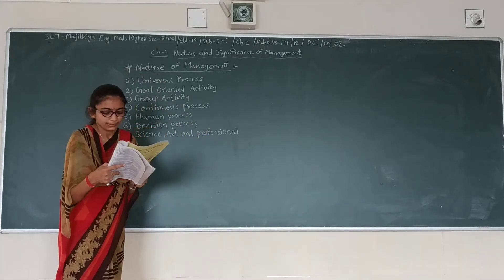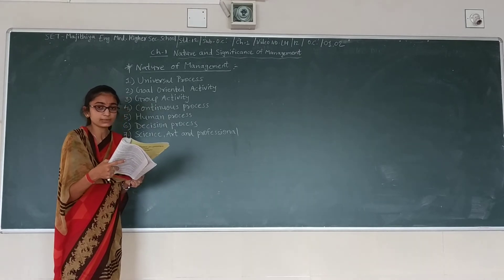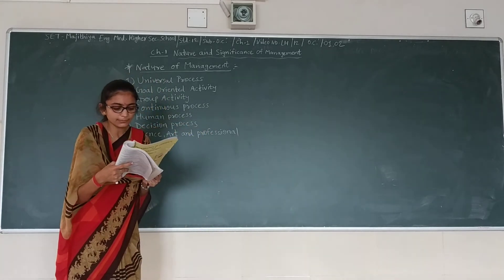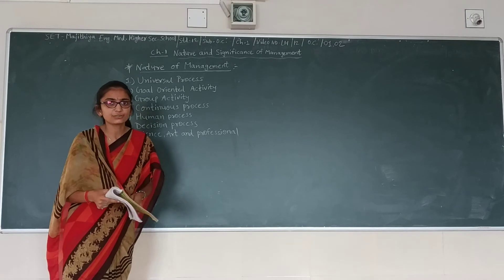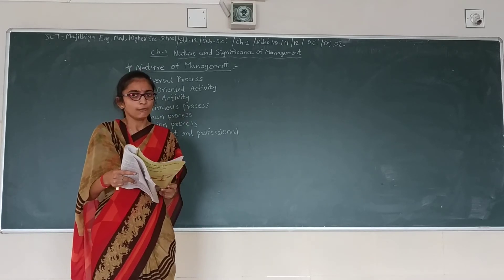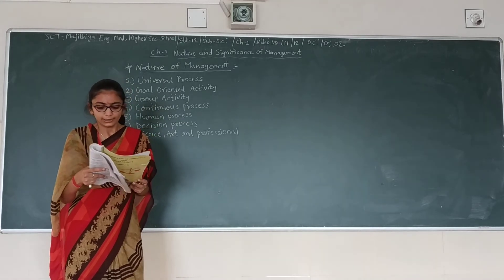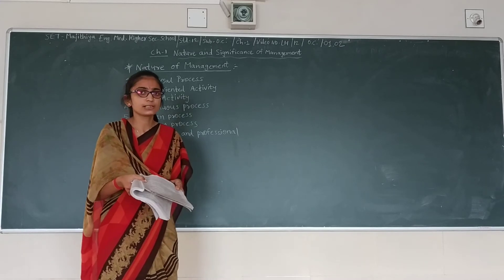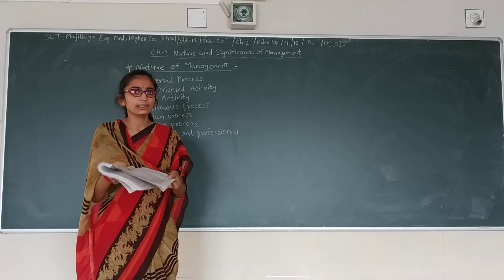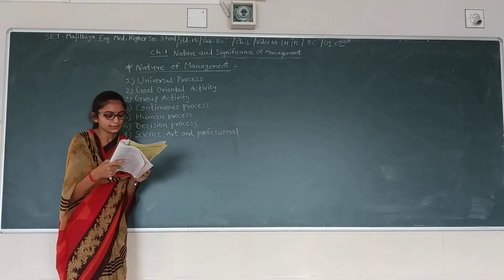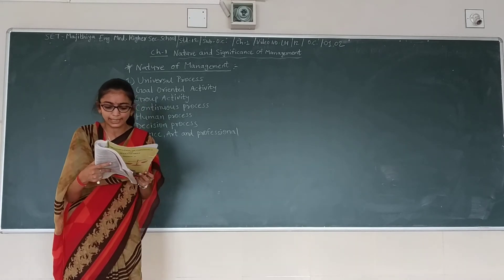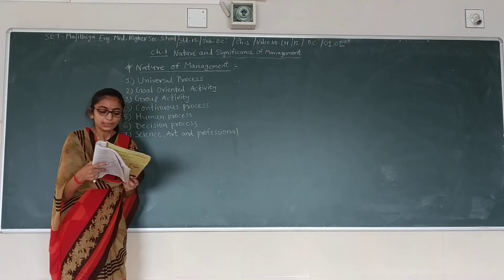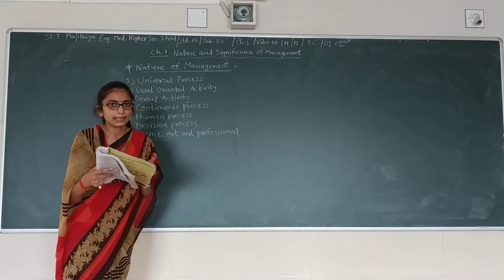Fifth is the human element. Management is most importantly about human beings. Other factors of production are useless without men. Management is done by human beings and for human beings. Machinery, for example, is useless without men. Man is at the centre of management, so management is a human process which is done by and for men.